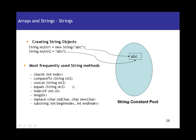Now, strings. Strings and arrays are conceptually similar. Arrays are a container that groups different values of the same data type. Strings are a group of characters. There are two ways in which you can create strings: you can either directly assign a string literal, or you can say new String("ABC"). There is a difference between these two declarations — let's look at that.